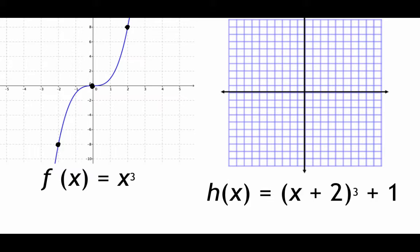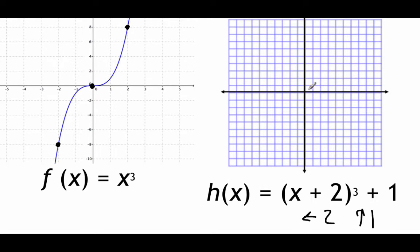For this next example, we use the same x cubed parent function, but the new graph has two things going on. There's a plus 2 inside the parentheses — addition inside parentheses means left two spaces. And there's a plus 1 on the end, so we go up one space. Starting from 0, 0; 2, 8; and negative 2, negative 8, we go left 2 and up 1 for each point. Then we draw in the curve through those new ordered pairs.